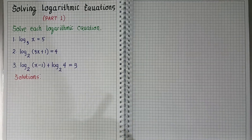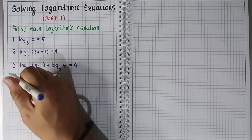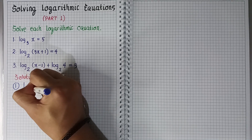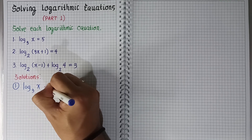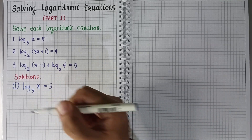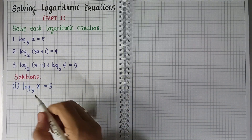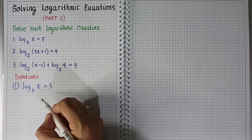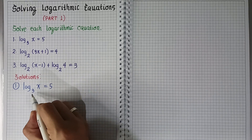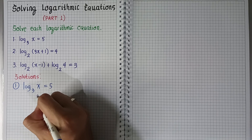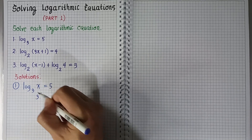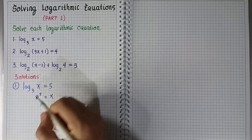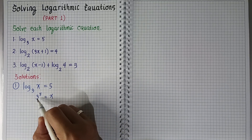For number one, we have the logarithm of x to the base 3 is equal to 5. We express this in exponential form: 3 raised to 5 is equal to x.